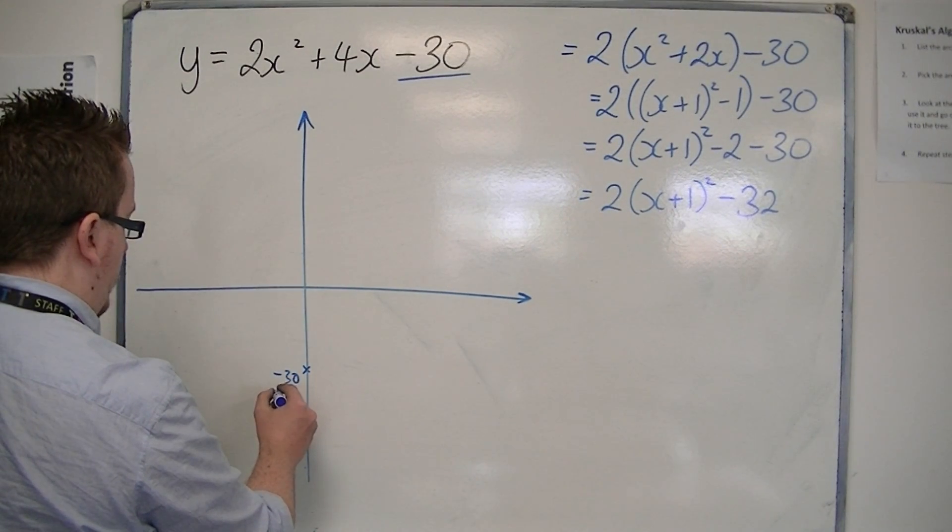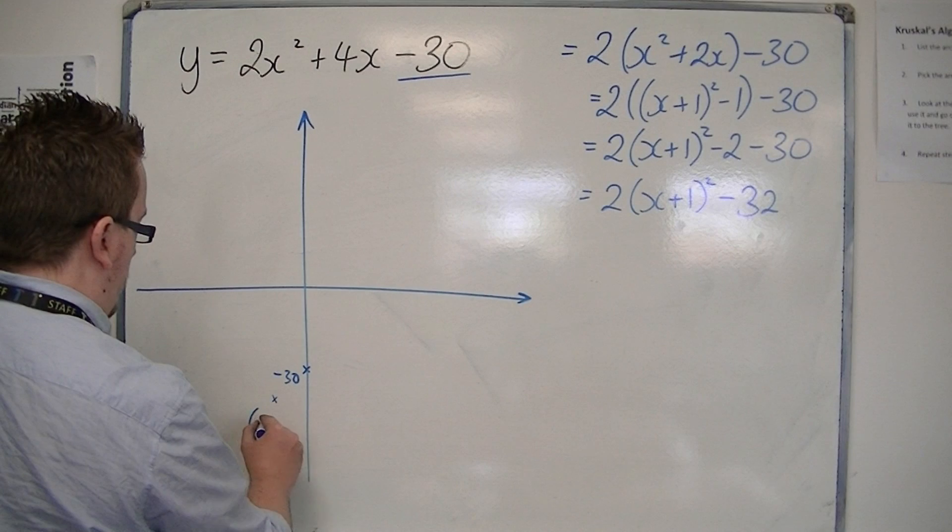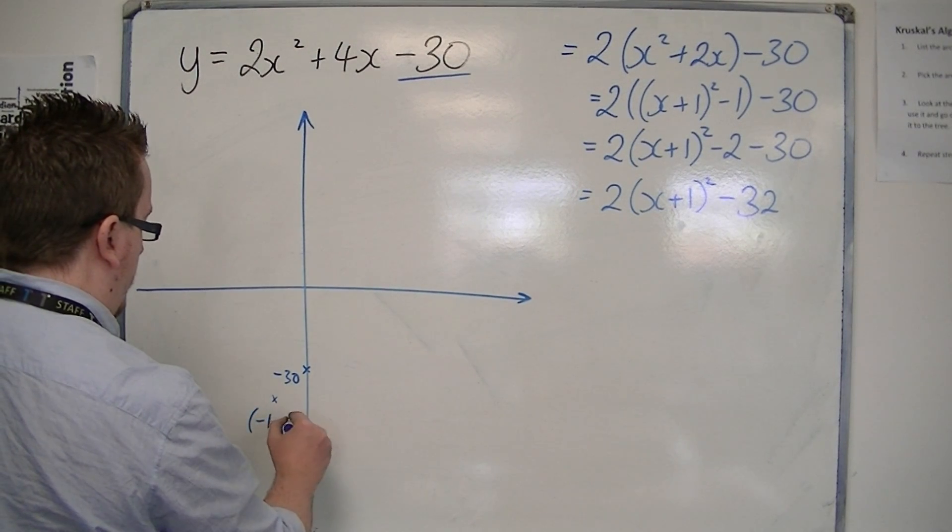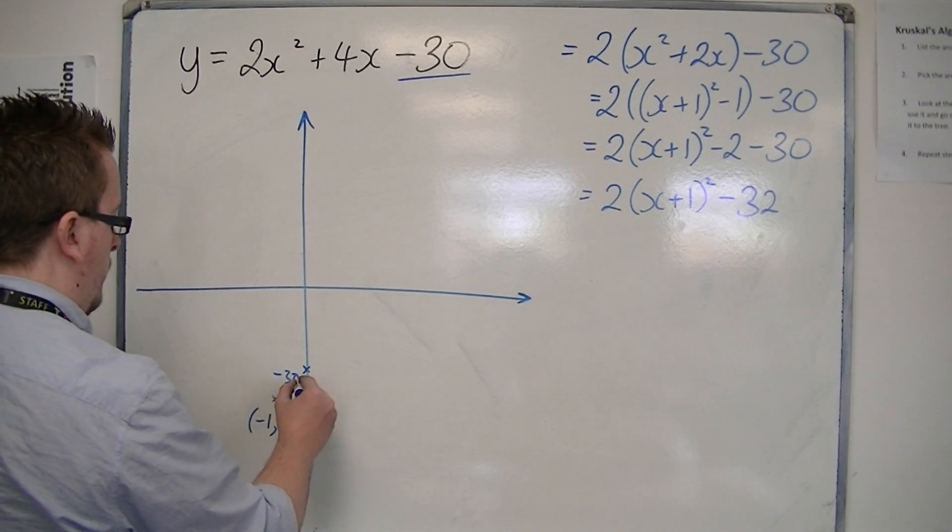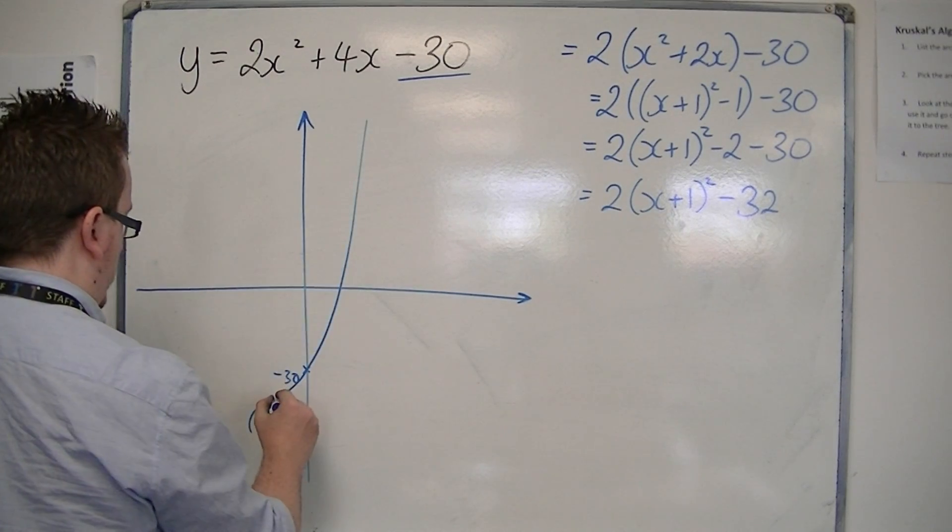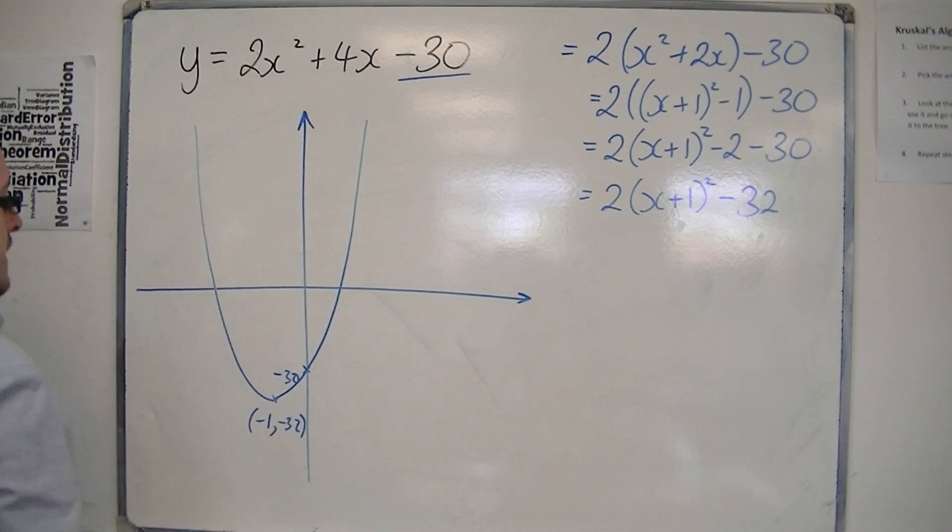So very close. So something like there. So we know that the vertex is at minus 1, minus 32. So the curve can go something like that.